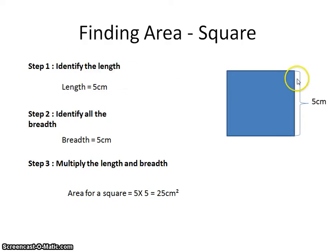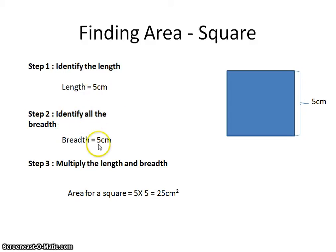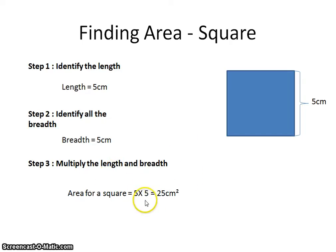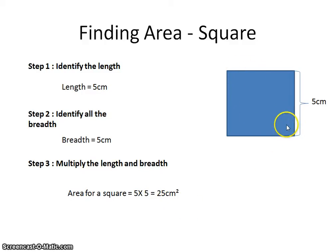How about finding the area of a square? The same process applies — we identify the length and breadth. A square shares the same length and breadth, which is 5 centimeters. So the breadth is also 5 centimeters. Multiplying them together: 5 × 5 = 25 centimeters squared. So the area of this square is 25 centimeters squared.